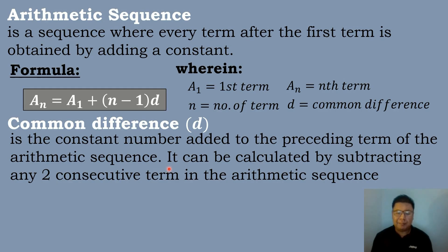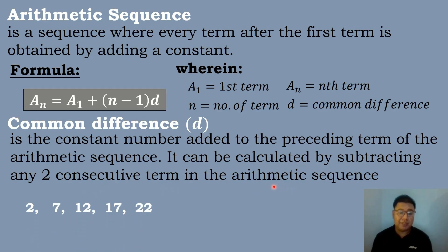The common difference can be calculated by subtracting any two consecutive terms in the arithmetic sequence. For example, we have the following sequence: 2, 7, 12, 17, and 22. To solve the value of the common difference, we will subtract the value of the second term minus the value of the first term.